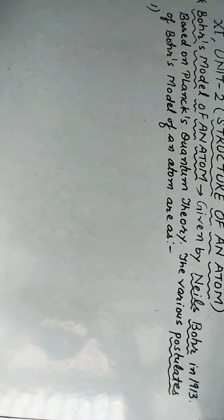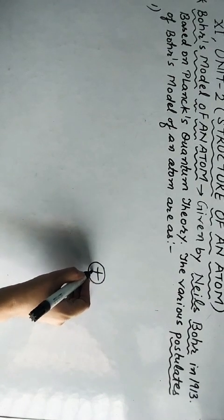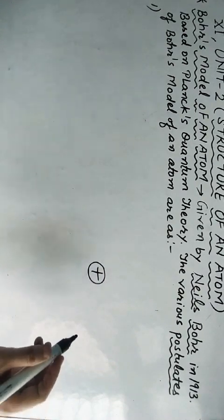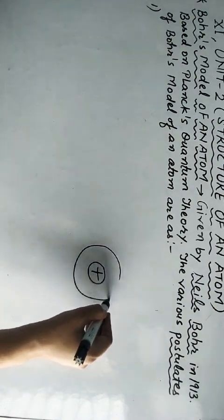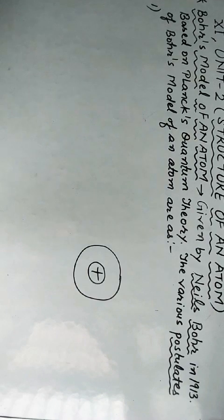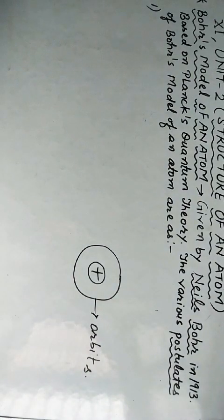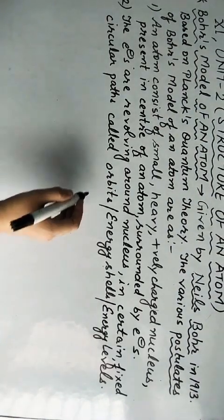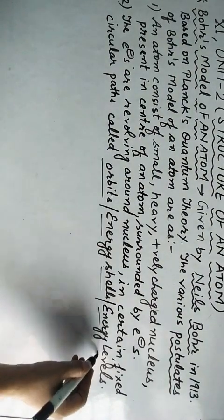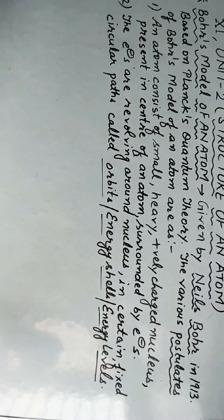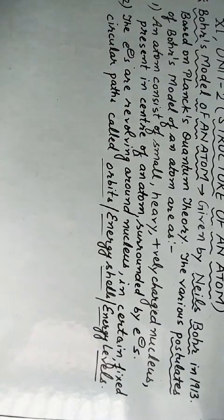Now let's talk about the various postulates of Bohr's model of an atom. The first postulate states that the atom consists of a small, heavy, positively charged nucleus present at the center, and the electrons revolve around the nucleus in certain selected circular paths. These circular paths are known as orbits, or energy shells, or energy levels, numbered 1, 2, 3 and so on, and denoted by the letters K, L, M, N respectively.